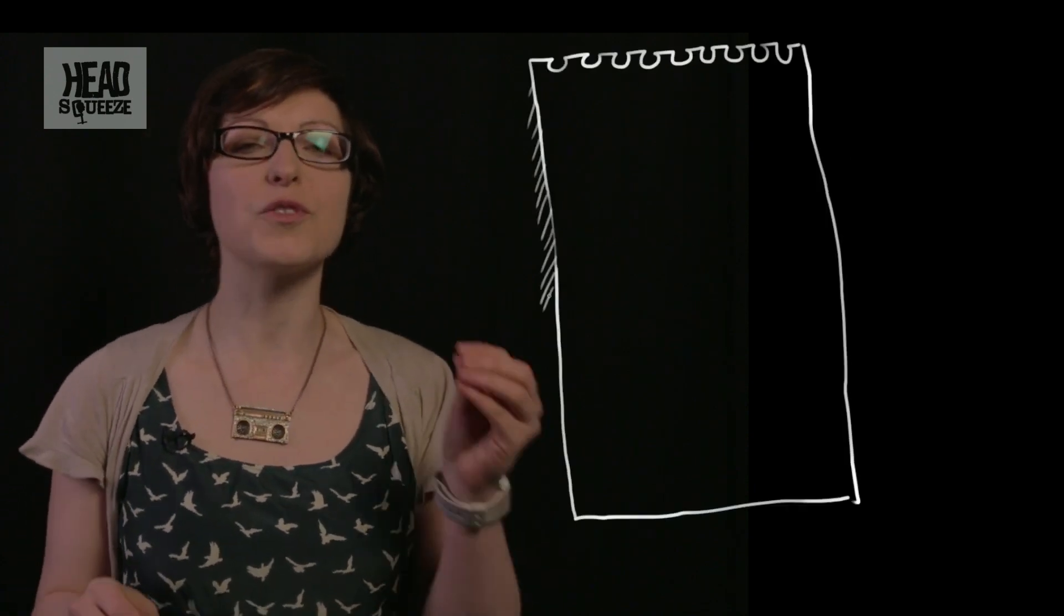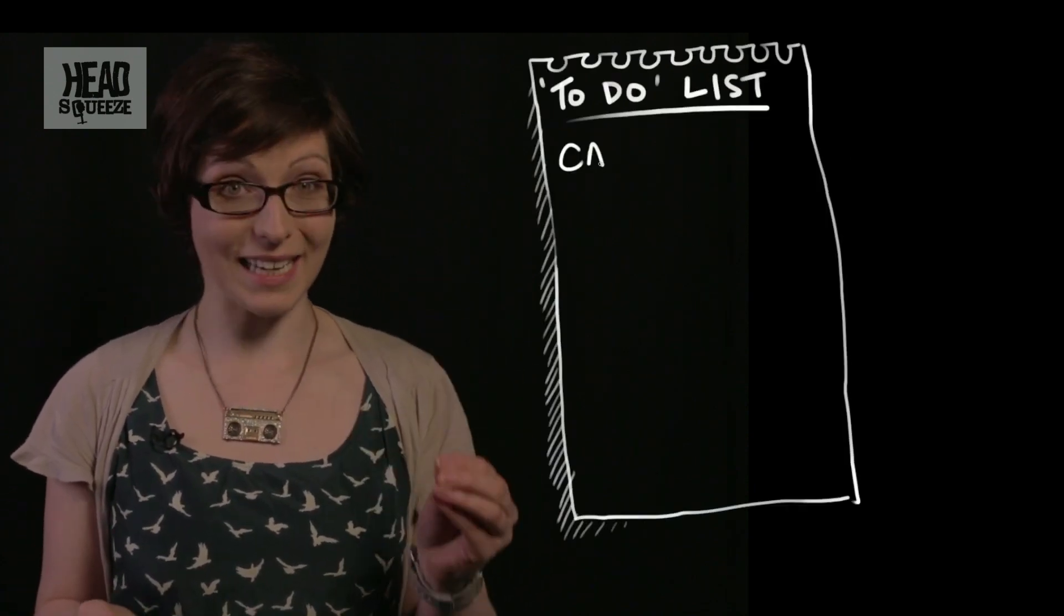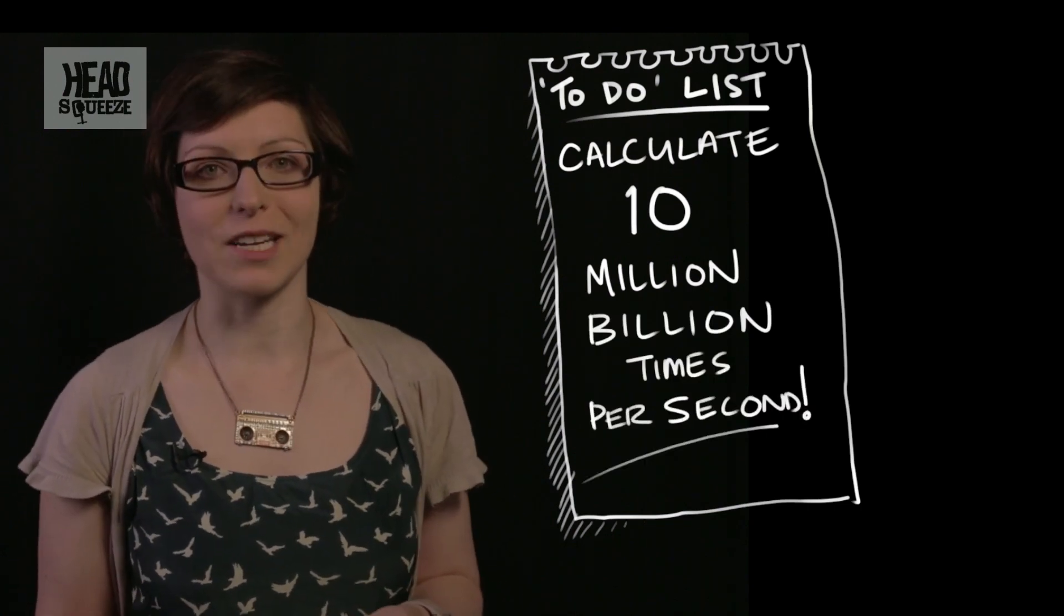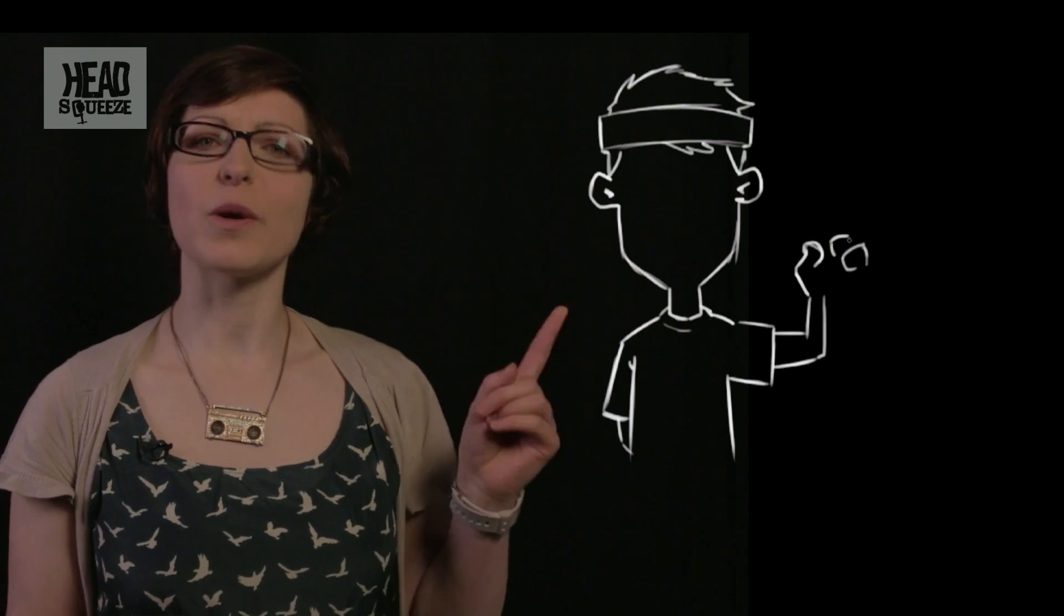That means your brain has a computer processing power of 10 million billion calculations per second. Someone once had the bright idea of adding up all these little electrical voltages to find out what you could power with all of that electricity and it turns out you could power a 25 watt light bulb. Isn't that a bright idea?